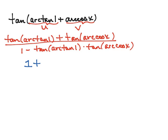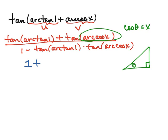To find the tangent of the arccosine of x, remember that arccosine of x means the cosine of something equals x. If we draw a triangle where cosine — adjacent over hypotenuse — equals x, then by the Pythagorean theorem the opposite side equals the square root of 1 minus x squared. So the tangent of theta in that triangle is opposite over adjacent: the square root of 1 minus x squared over x.